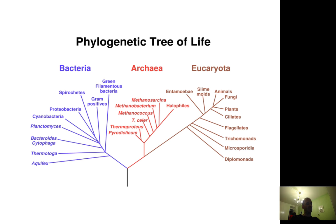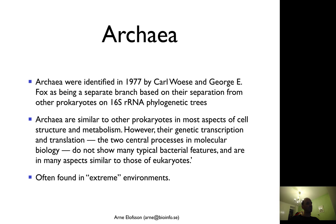We can also use the tree of life to see what the closest relative to animals is — and it's actually fungi, which are probably the closest thing to animals among multi-cellular organisms. This phylogenetic approach was also developed using 16S rRNA sequencing by Carl Woese and George Fox.